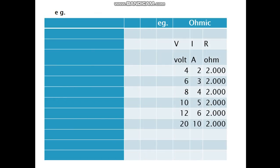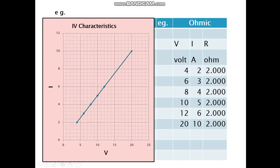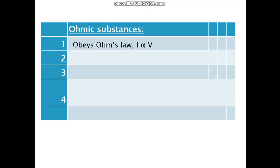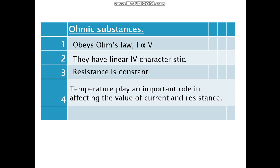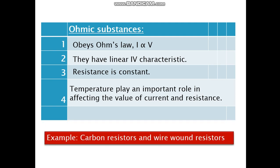Example of the Ohmic substances. So before that, let's see the Ohm's law. We see the potential difference and the current is measured using the earlier circuit diagram. So we vary the voltage, measure the current, find R as you put it in the value V is equal to I R. So R is equal to V upon I. So you put the value over here and you get R as constant. And if you plot an IV characteristic, IV graph, then you get a straight line graph. So that's linear. So Ohmic substances, Ohm's law, I is proportional to V. They have linear IV characteristics. Resistance is constant. Temperature plays an important role in affecting the value of current and resistance. Examples are carbon resistors and wire wound resistors. There are many other examples also.